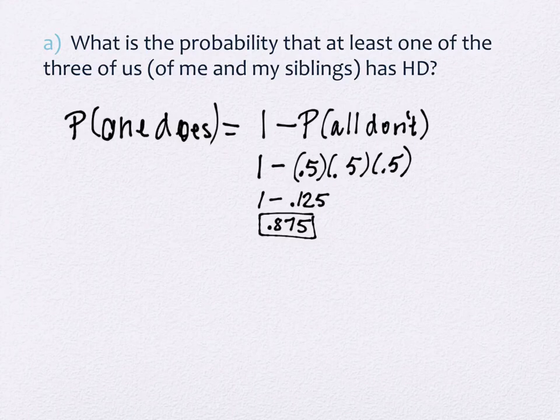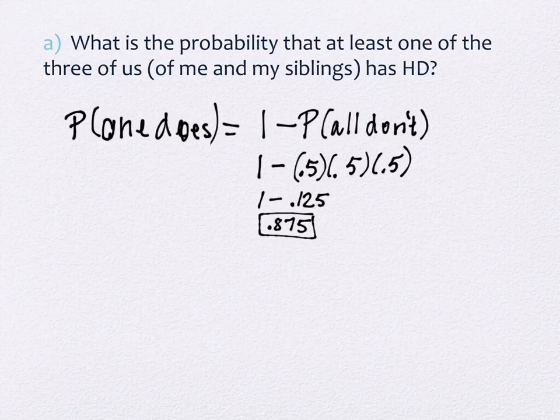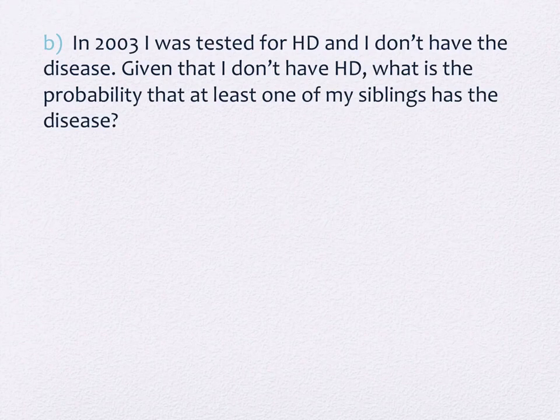Some people don't have any knowledge of having the disease until they're very old — in their 80s. There is also childhood onset. A woman at my childhood church had a daughter who was a little younger than me who had childhood onset — meaning she was in her 20s when the disease began, and she ended up having to be in a care facility. So I do not have the disease, but my brother and sister are still in the gray area.